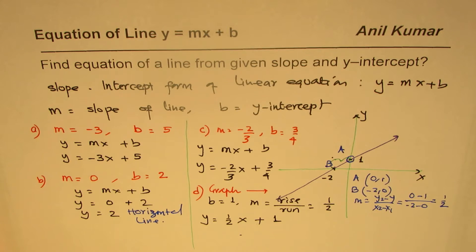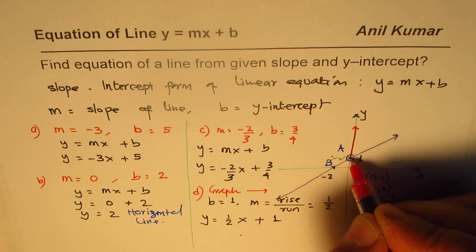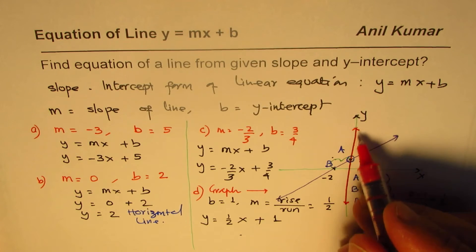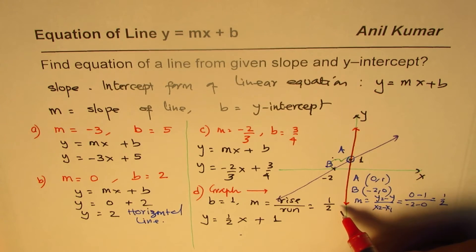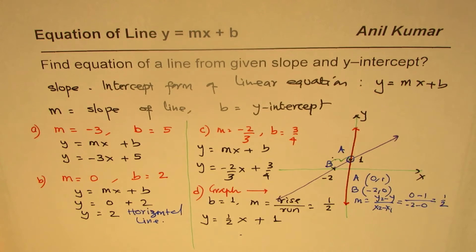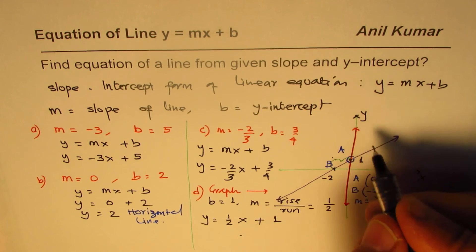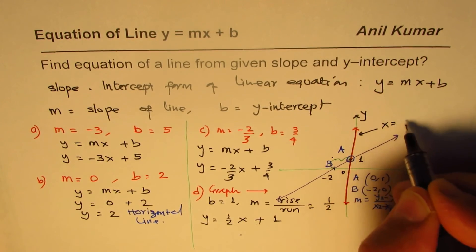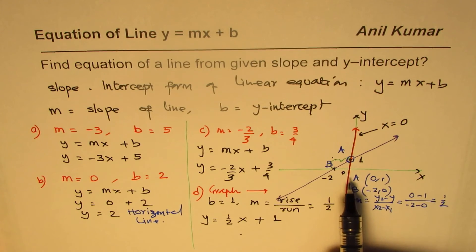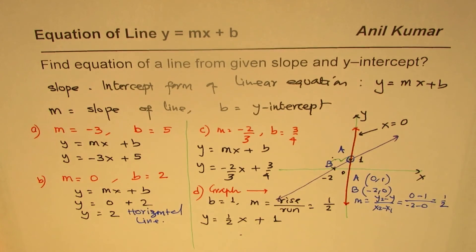Now the question for you is: find the equation of the y-axis. At every point on the y-axis, the x value is 0, so the equation is x = 0. Since the slope is undefined for a vertical line, we cannot use slope-intercept form — instead we write x = 0, which equals the x-intercept when the line is vertical. I hope that helps, thank you and all the best!